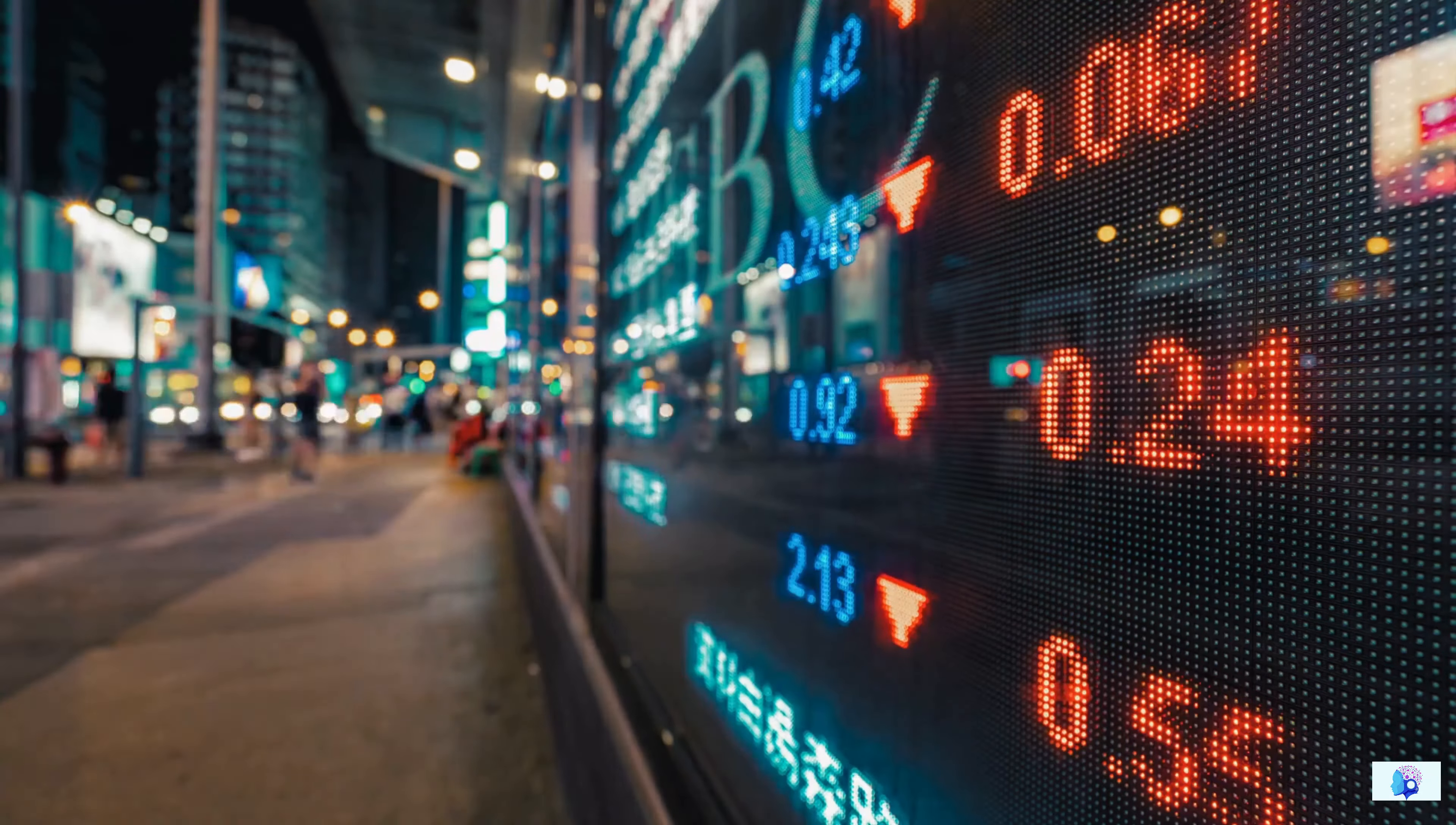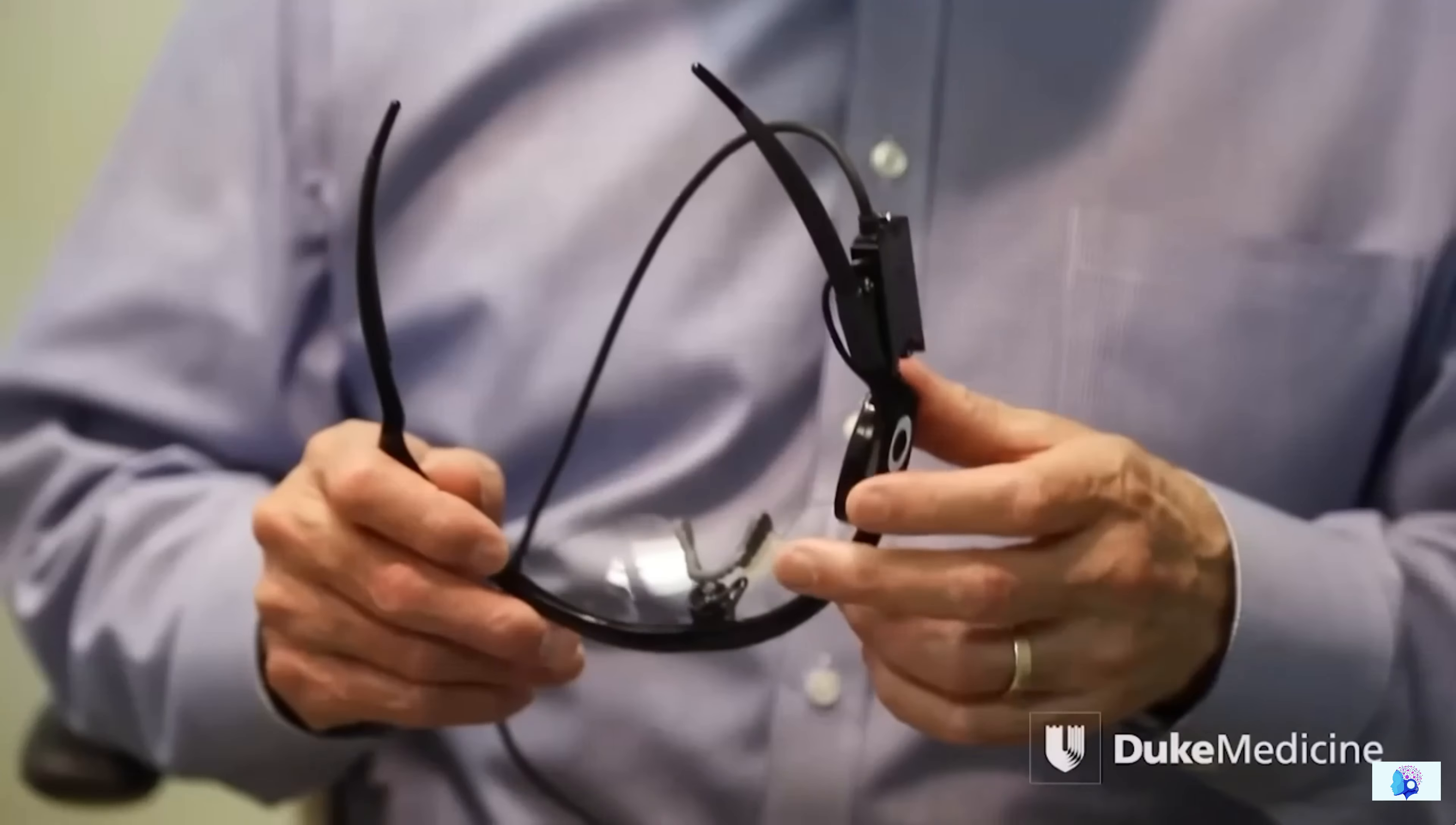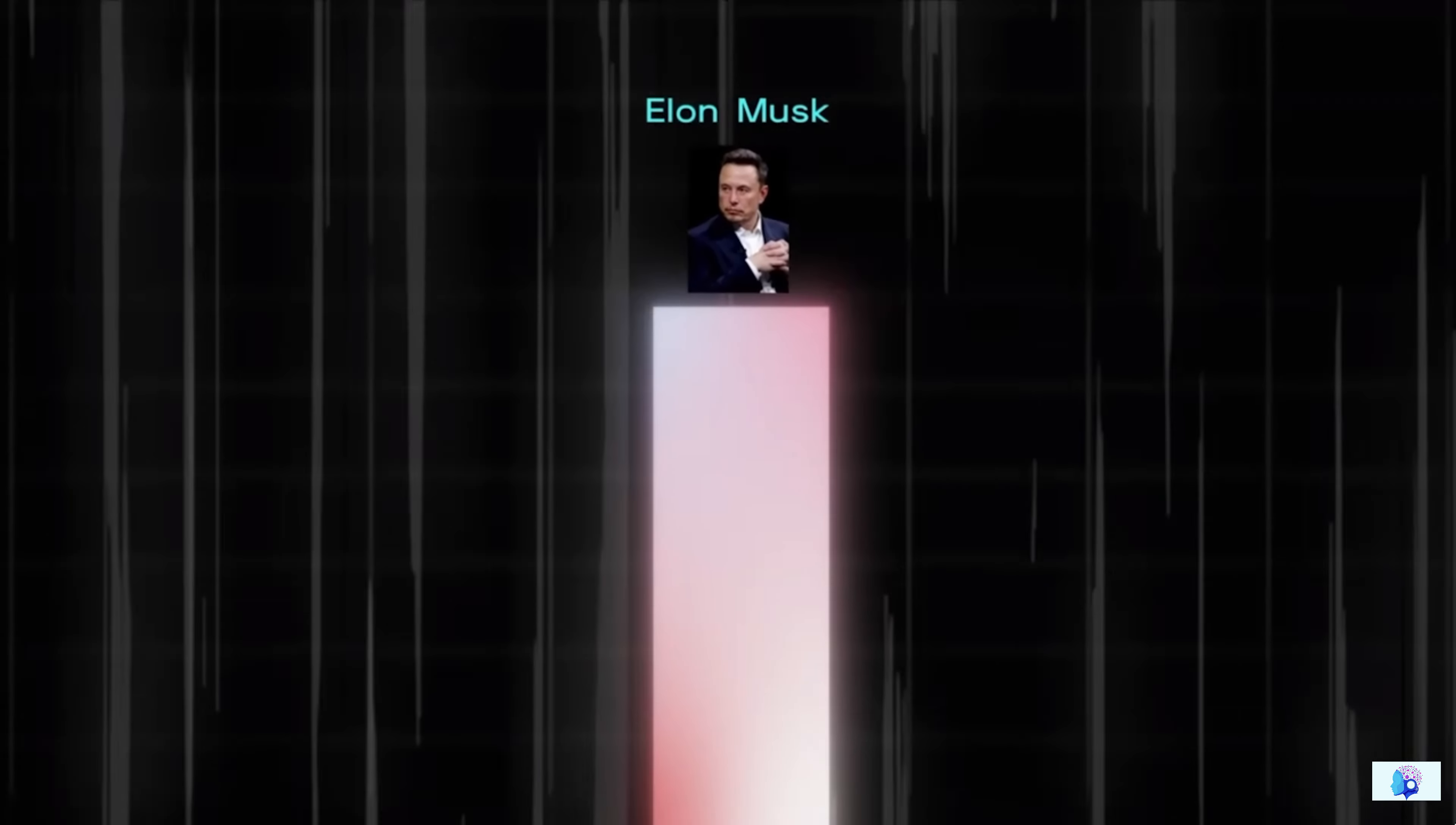But then, cut to 2024. Elon Musk successfully implanted his BCI chip in humans. And with the help of this, you won't believe that a paralyzed patient is now able to play online chess. In fact, with the help of this BCI technology, he is going to make a pair of glasses that a completely blind person will be able to see. This technology is called the bionic eye. In just eight years, Elon Musk has gone far ahead of both Neuralink and Synchron companies. But how did Elon Musk do this?